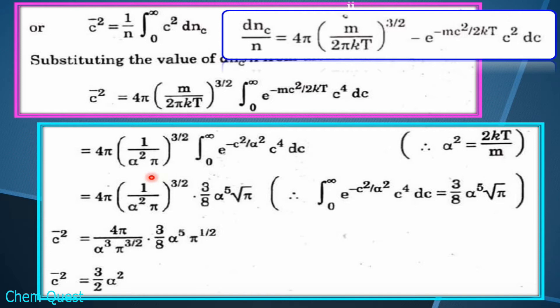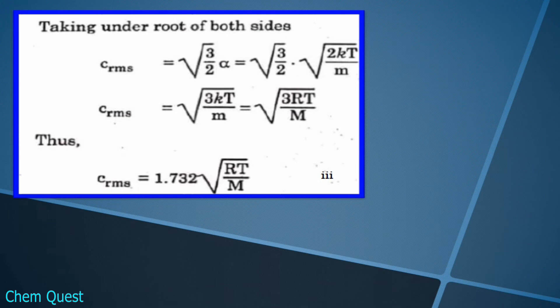After substitution, the expression becomes 4π × (1/α² π)^(3/2) times the integral of e^(−c²/α²) × c⁴ dc. This standard integral evaluates to (3/8) × α⁵ × √π. We multiply 4π with this factor — similar to how we did in the previous lecture — and after simplification the mean square velocity c̄² comes out to be (3/2)α².